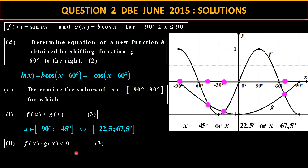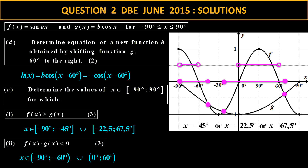The next question asks where the product is less than zero — that means negative, so positive times negative or negative times positive. Between negative 90 and negative 60 the f graph is positive and the g graph is negative, giving a negative product. Then between 0 and 60 the f graph is positive and the g graph is also negative — positive times negative. Because we don't include equal to zero, we use round bracket notation, not square brackets.